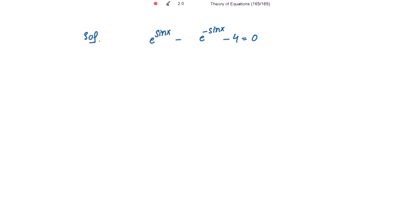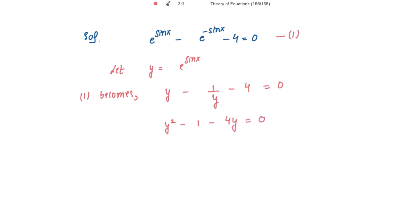Let's solve this equation. Let's put y equal to e to the power sin x. So the equation becomes y minus 1 divided by y minus 4 is equal to 0, that is y squared minus 4y minus 1 is equal to 0. So we are getting a quadratic equation in y.